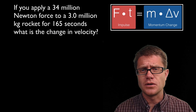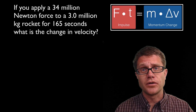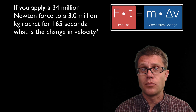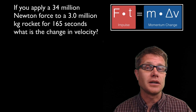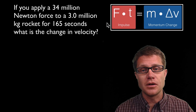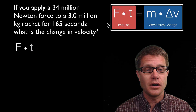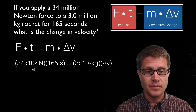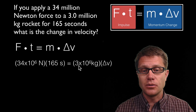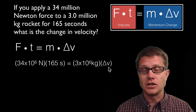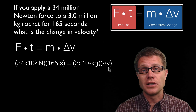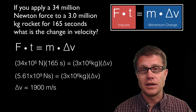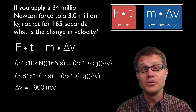Here is a real example from the Saturn V rocket: if you apply a 34 million newton force to a 3.0 million kilogram rocket for 165 seconds, calculate the change in velocity. Using force times time equals mass times change in velocity, we plug in: 34 million newtons × 165 seconds = 3 million kilograms × Δv. Multiplying the left side and dividing by the right gives a change in velocity of around 1,900 meters per second.